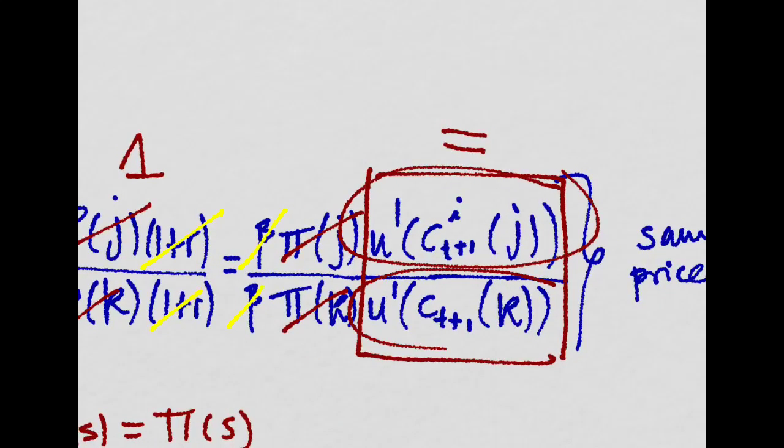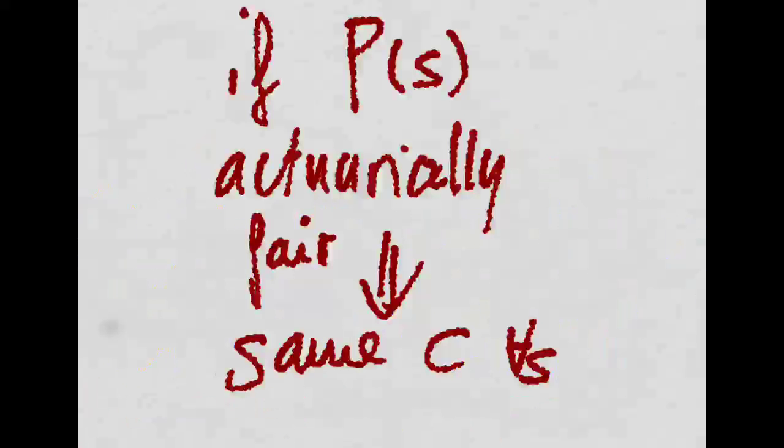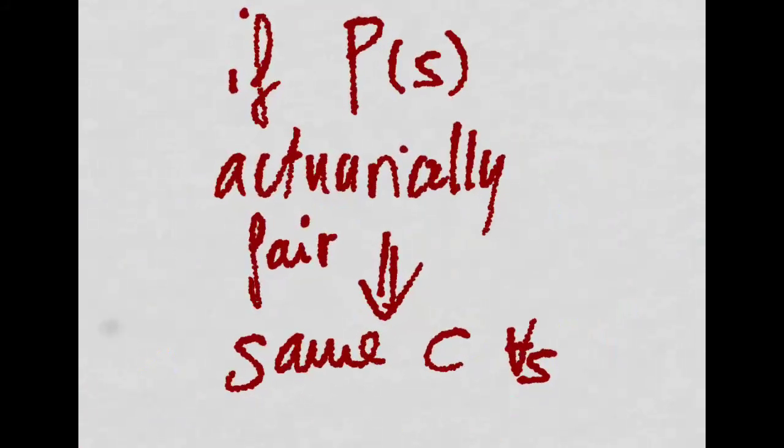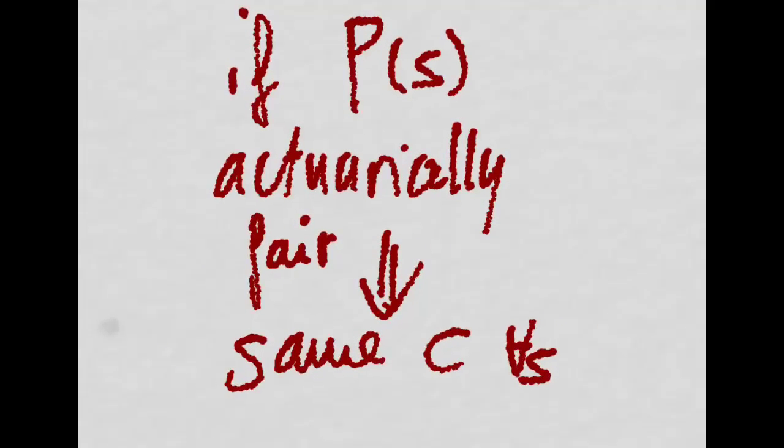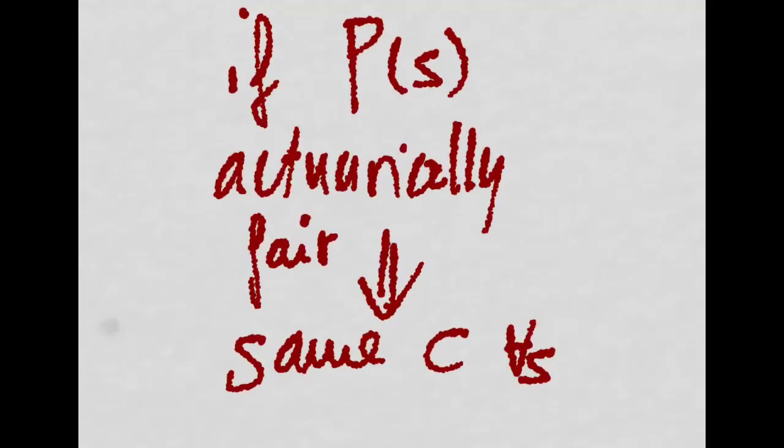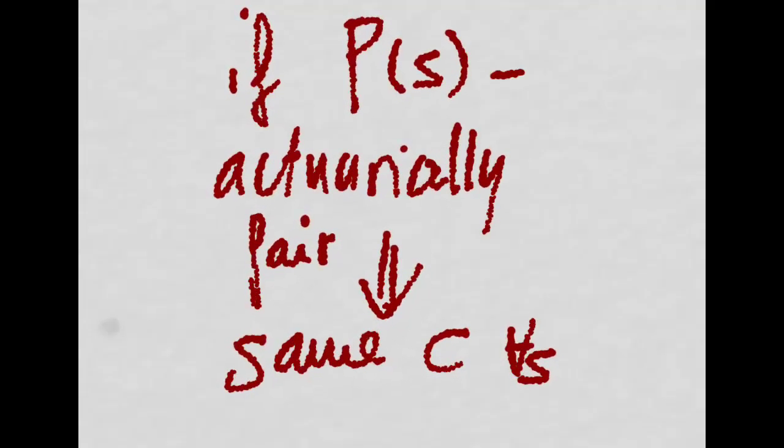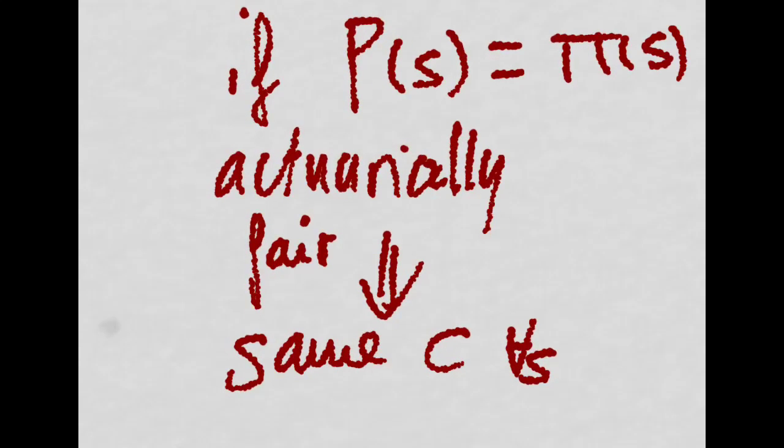And also, since the two marginal utilities are the same, then it has to be the case that the consumption levels are the same, if the price of the Arrow-DeBrew security is equal to the probability that the specific state happens.